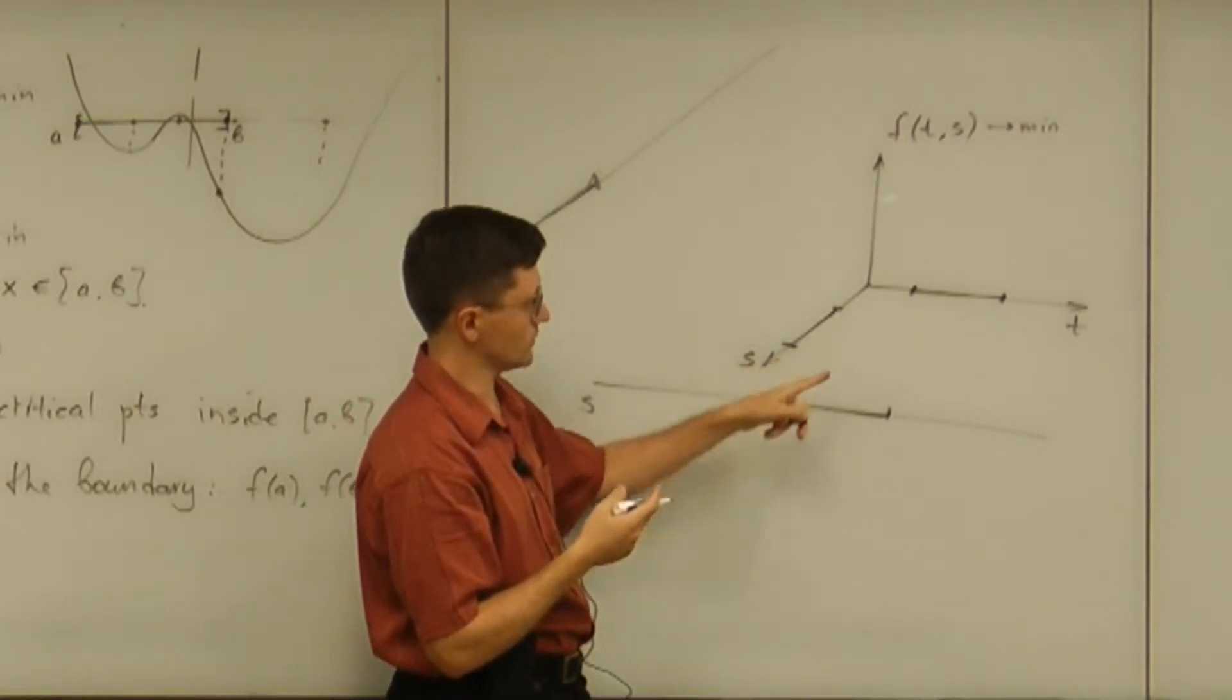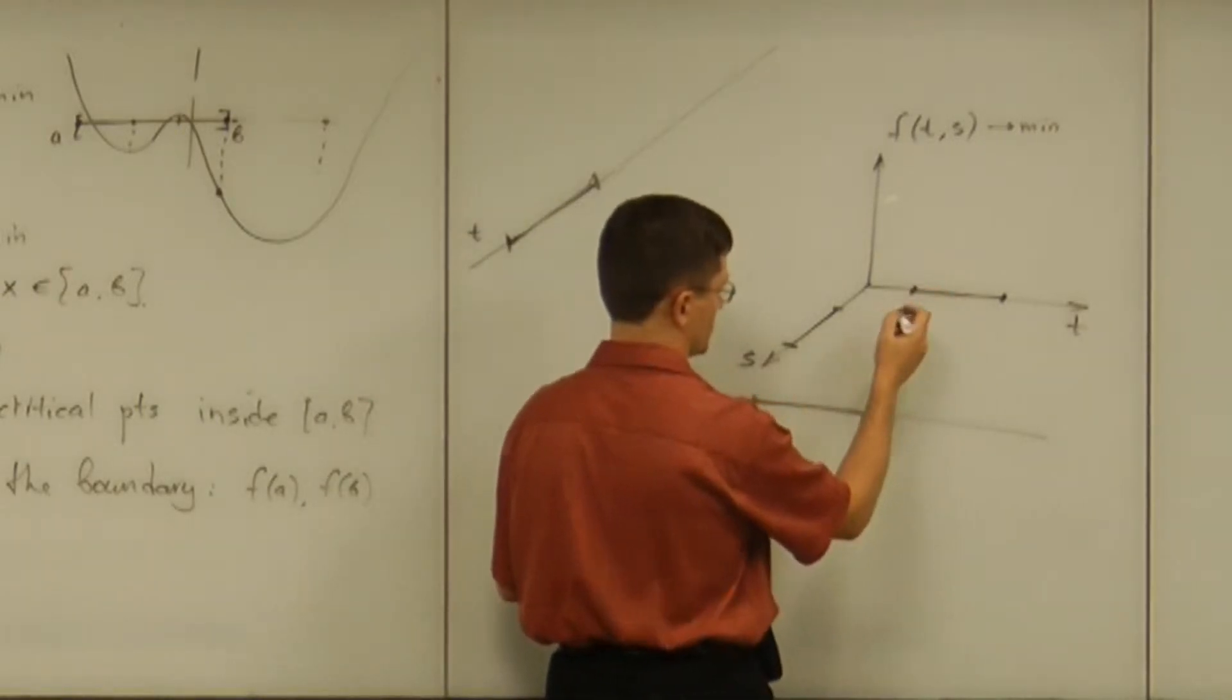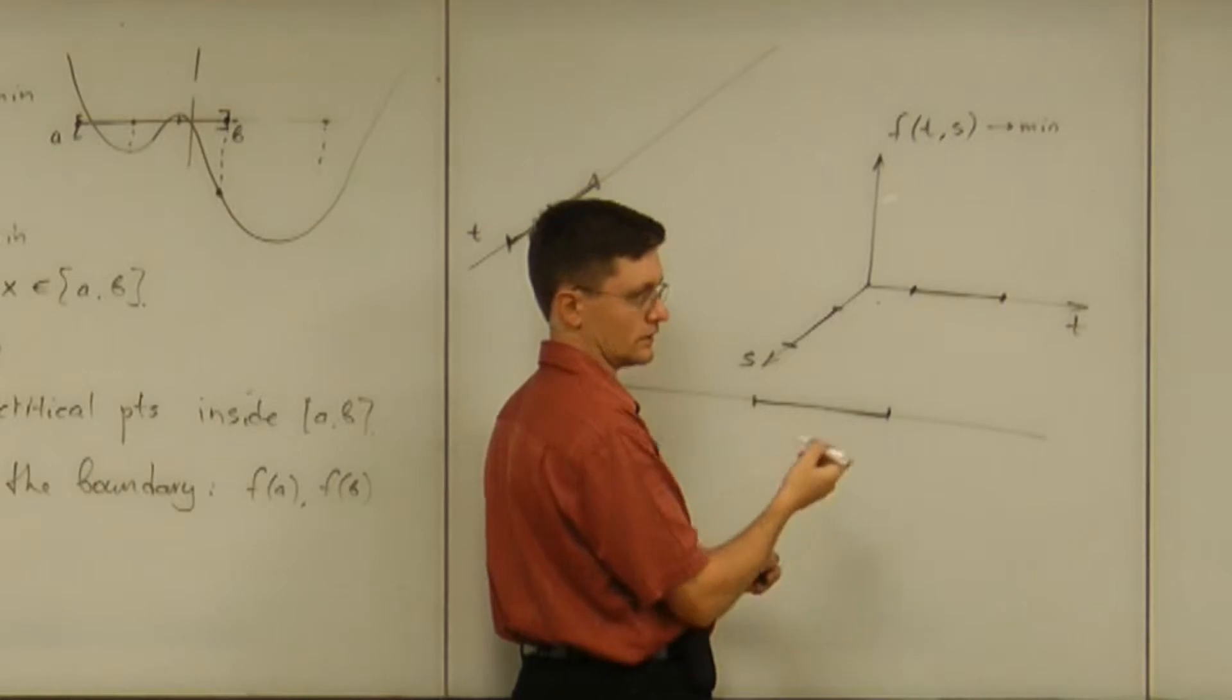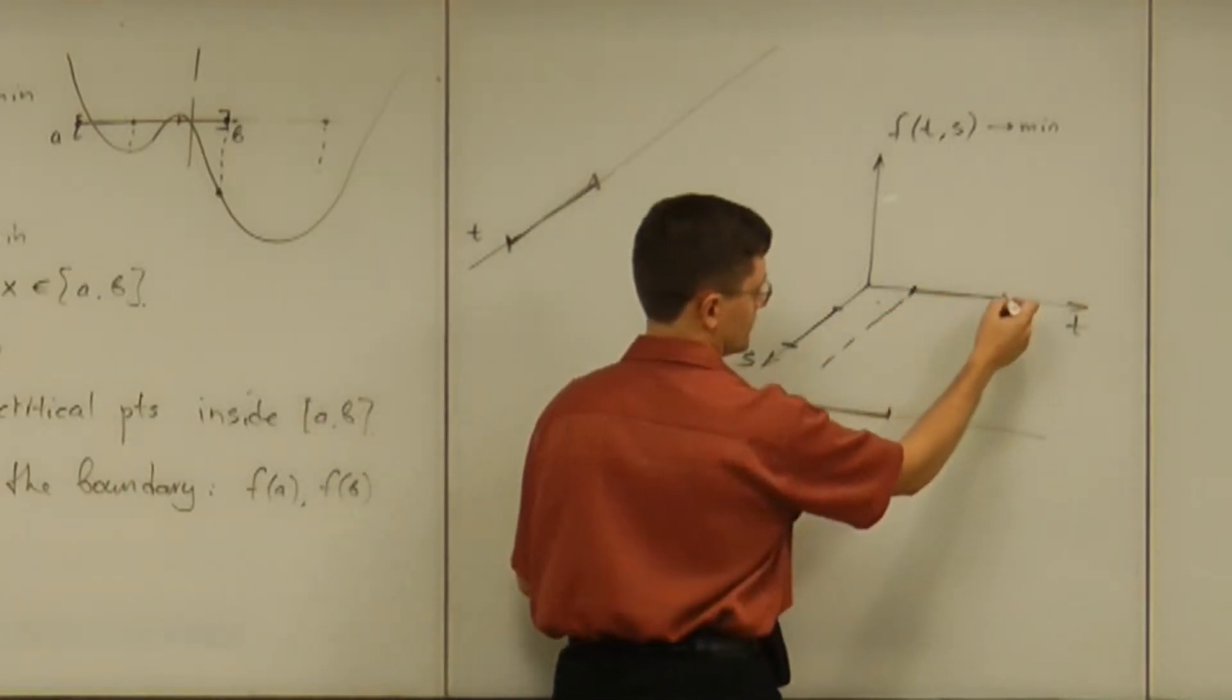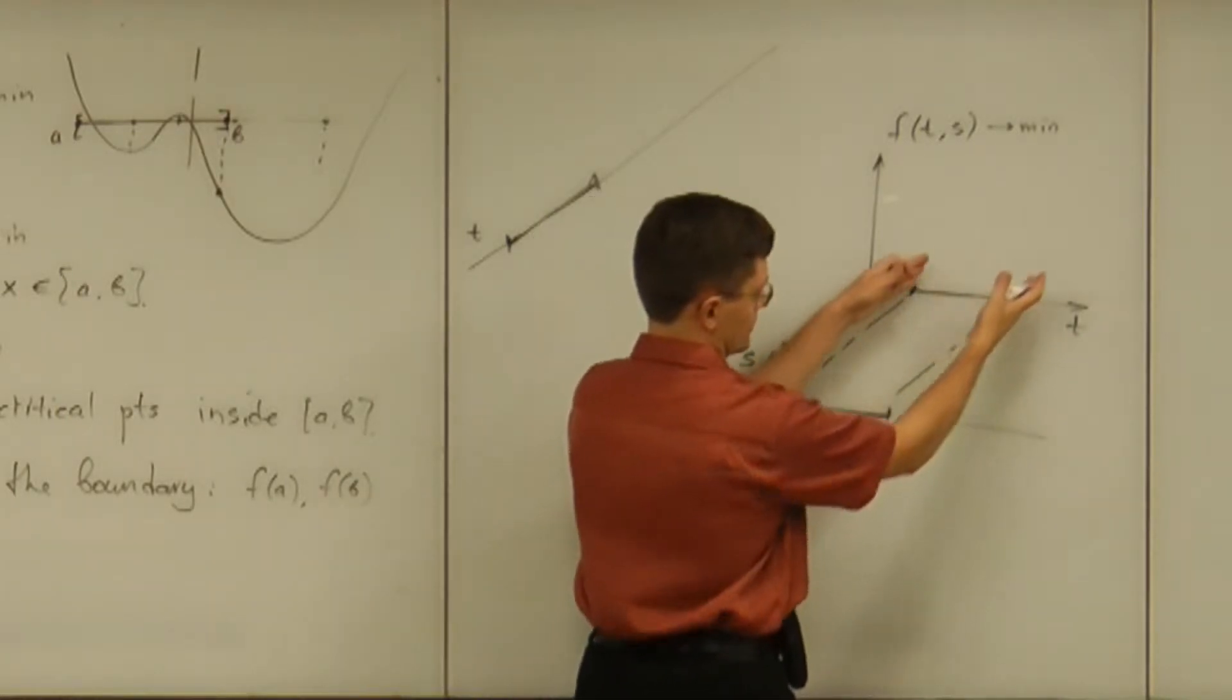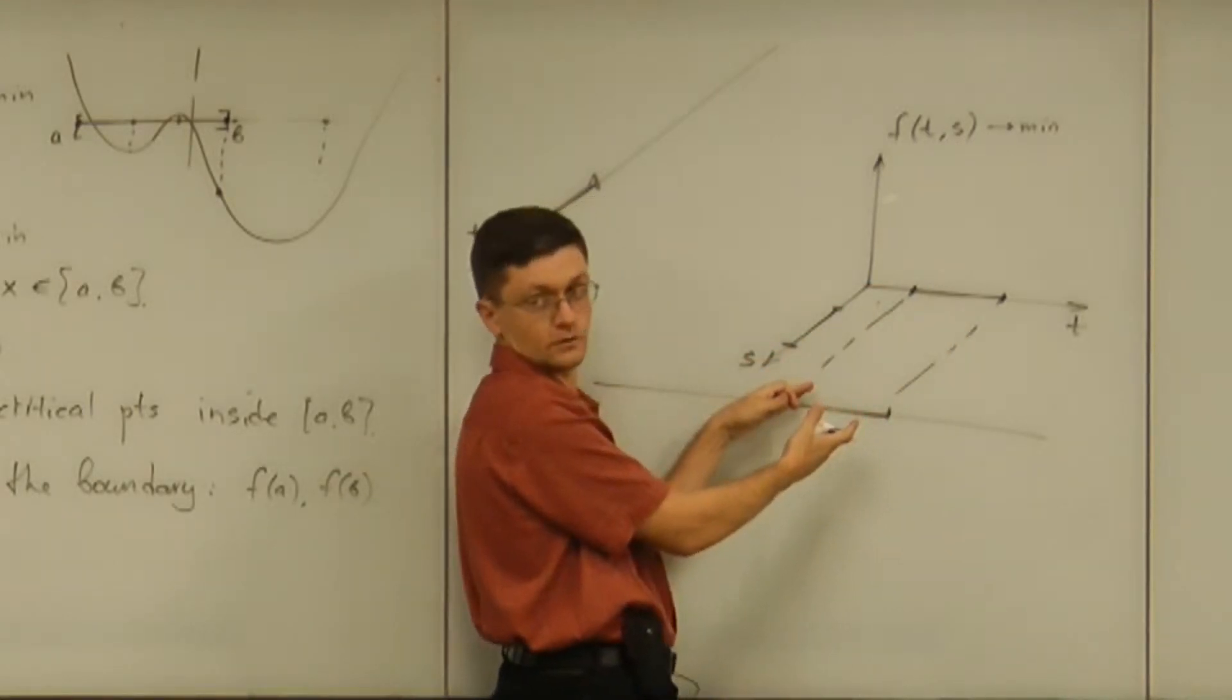Now, what does it mean for the function s? What are going to be the points on the domain that are allowed? Well, t being between these two means all the points in this strip are allowed. Right?